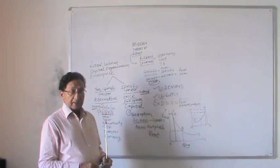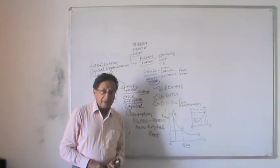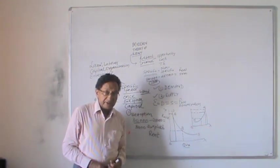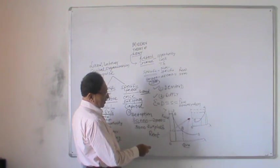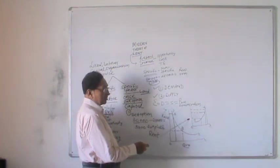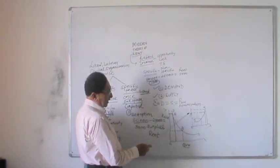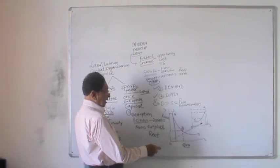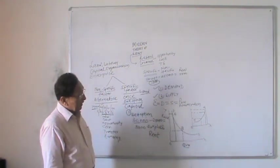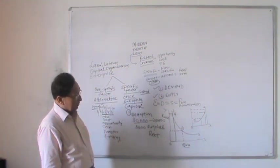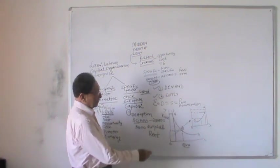A producer wants to pay less for the factors of production, but the supplier is the factor itself. The factor will say that if the producer offers lower wages, lower interest, or lower rent, supply will be low. Higher the price, higher will be the supply. In other words, the supply of factors depends on the prevalent price, and on that basis supply will be determined.